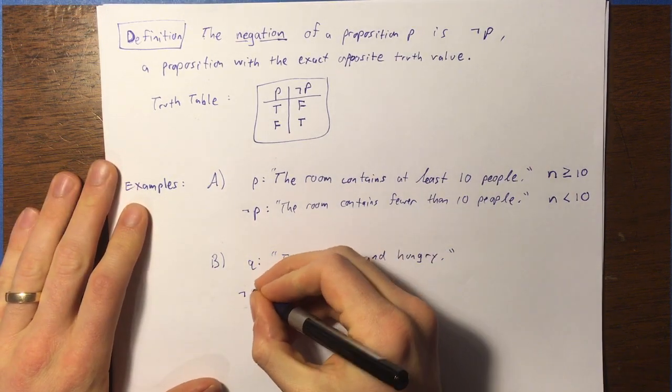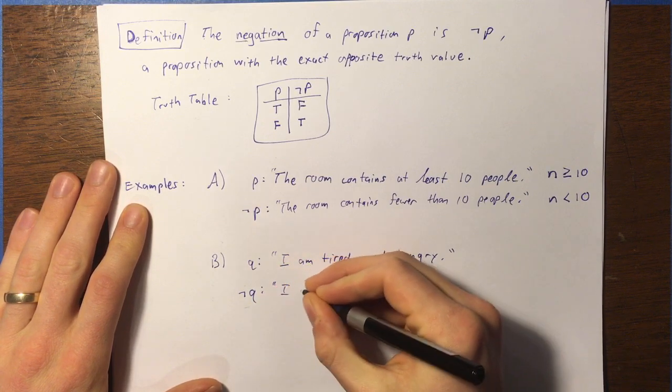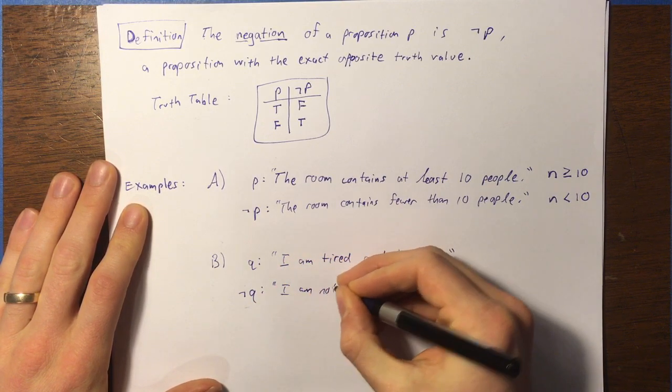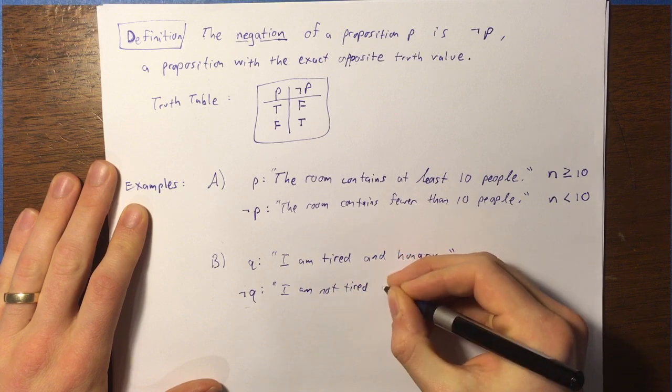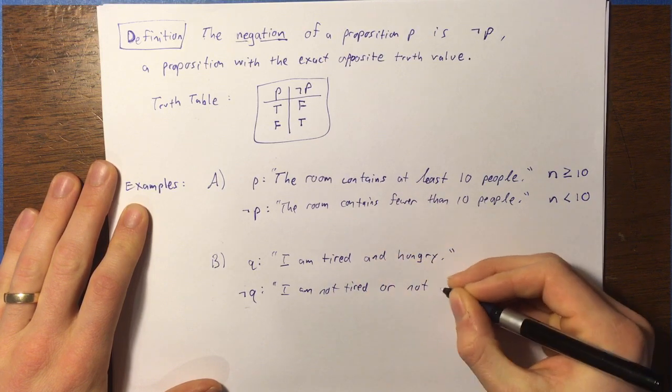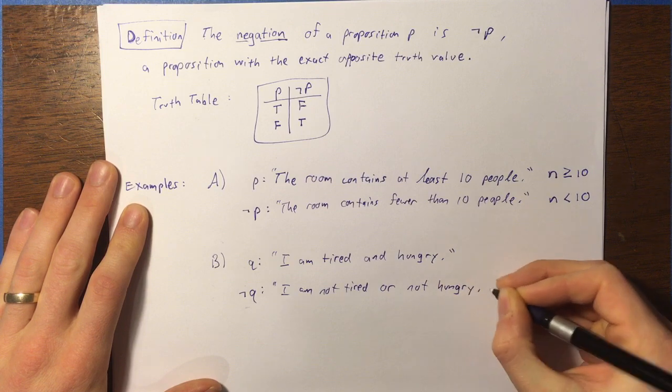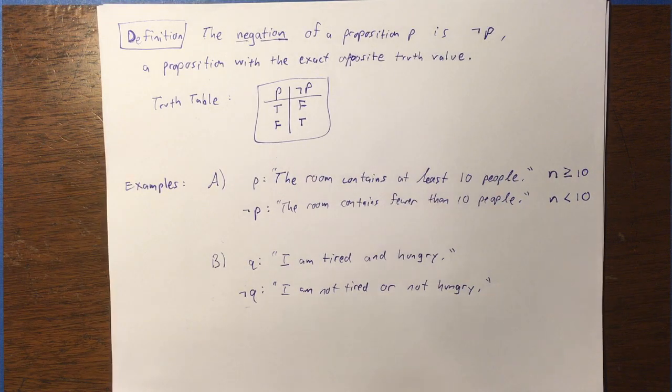So, the way that we can write that, the way we can write not Q is to say, I am not tired or not hungry. All right. There we go.